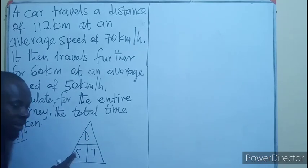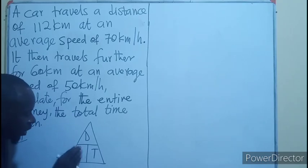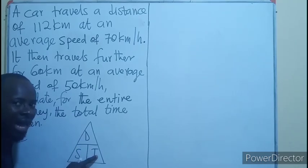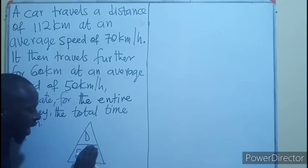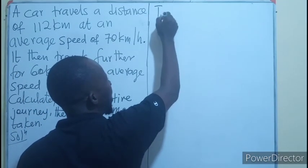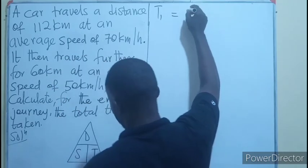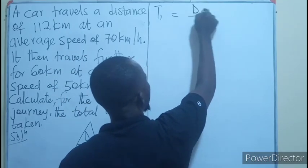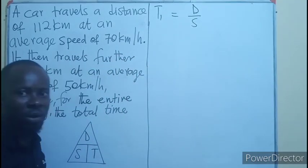So if you are looking for the speed, speed is equal to distance over time taken. Then if you are looking for time, it's going to be the distance over speed. So let's find the first time, which will be the first distance over the first speed.